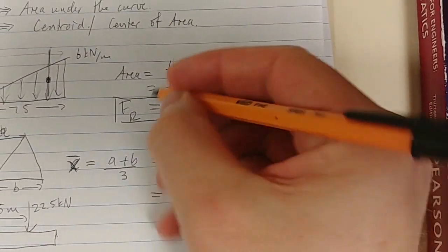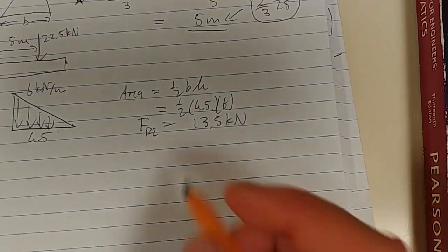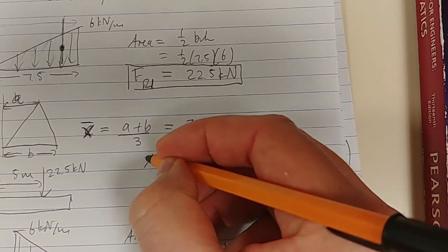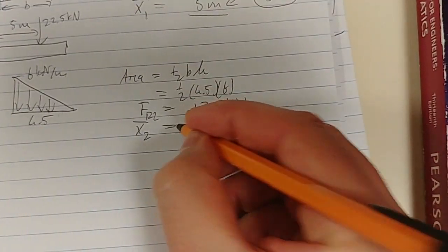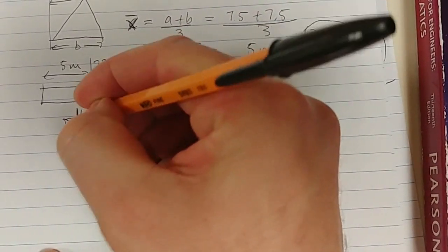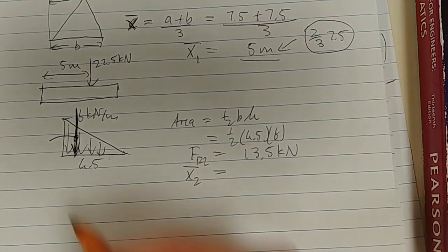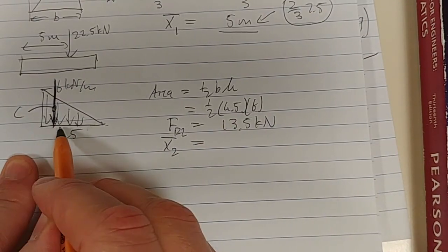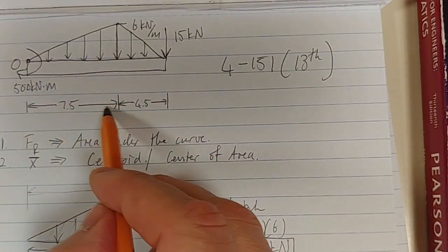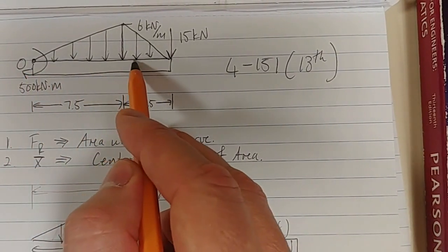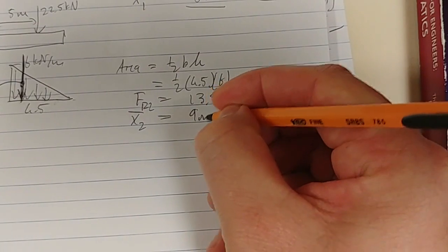This is your FR1. What about x̄2? We can call this one x̄1. x̄2 is through the centroid, either 2/3 from that side or 1/3 from that side. There's your centroid. 1/3 from this side means 1.5 meters at the beginning of this triangle, but we need to add on the 7.5. Remember we're measuring from point O. So 7.5 plus 1.5 gives us 9. We've got 9 meters.